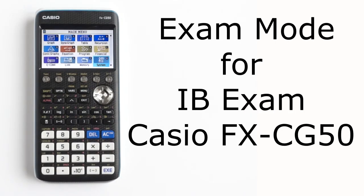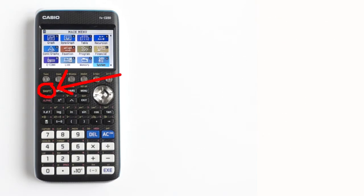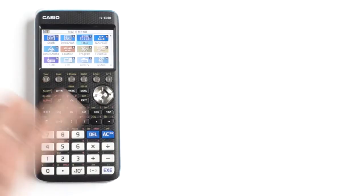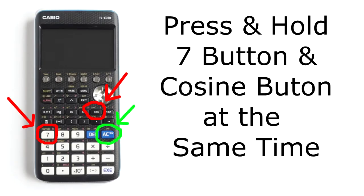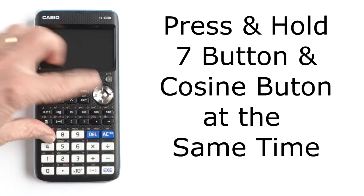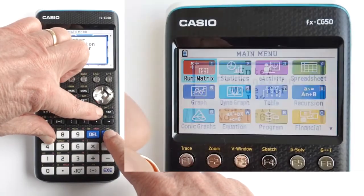How do I go into exam mode for the IB, International Baccalaureate, exam on the Casio FX-CG50? First, you need to turn off the calculator by pressing the shift button, then the AC ON button. Then, with your left hand, press and hold the 7 button and the cosine button at the same time. While holding those two buttons, long press the blue AC ON button.